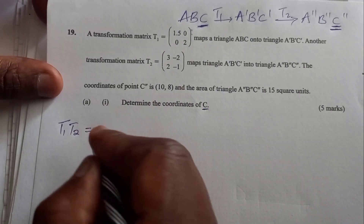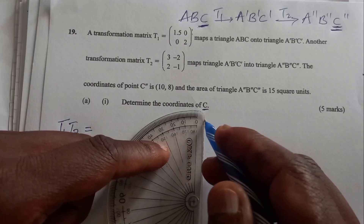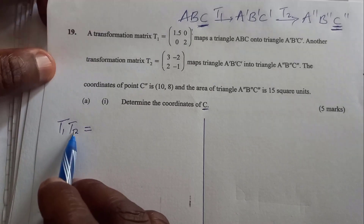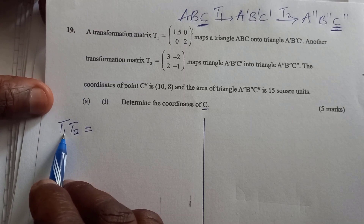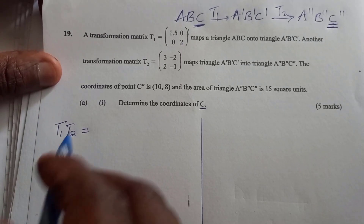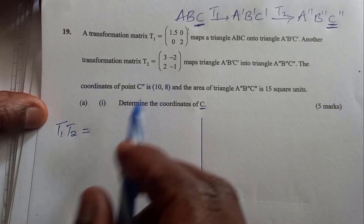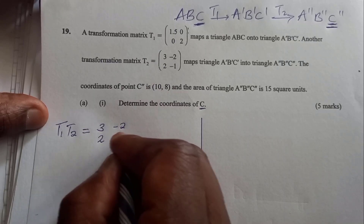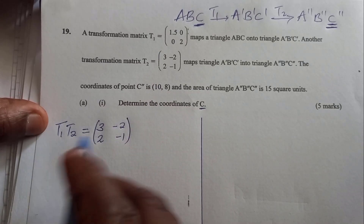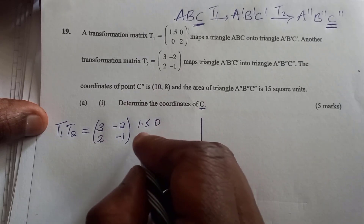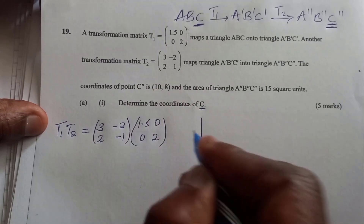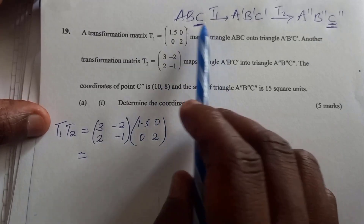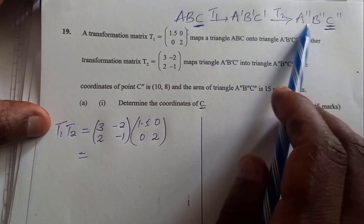For successive transformation with T1 then T2, we start with T2 and multiply by T1. So we take T2 = [3, -2; -1, ?] and multiply by T1 = [1.5, 0; 0, 2]. This will give a single matrix of transformation that maps ABC to the final image A''B''C''.